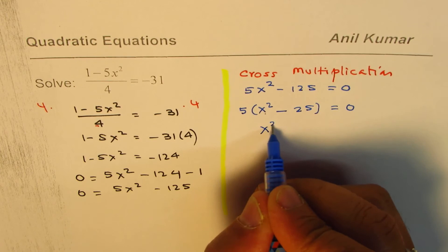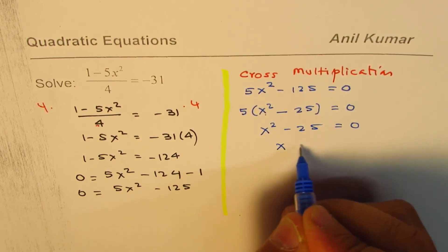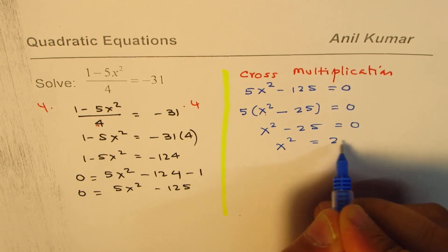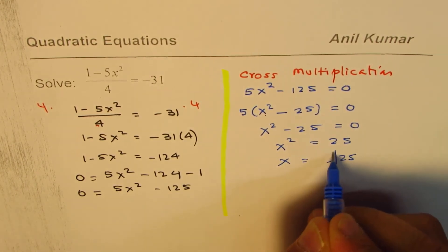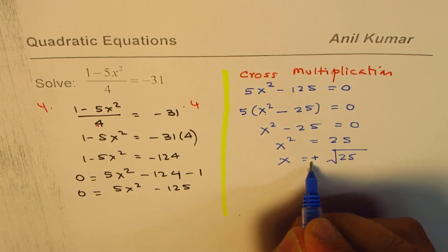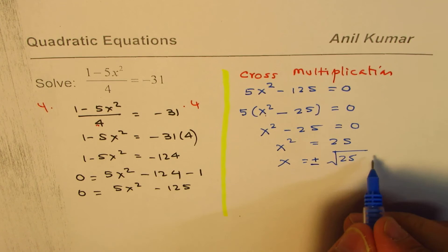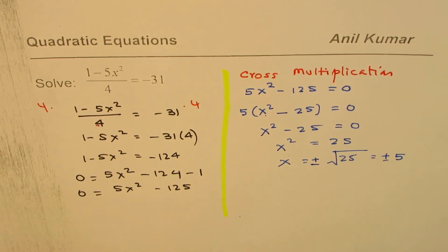That is to say x squared minus 25 equals 0, or x squared equals 25, or x equals square root of 25. Whenever you do square root, you have to take both positive and negative. Minus 5 squared is also 25. So you get plus minus 5. That is one way to do it.